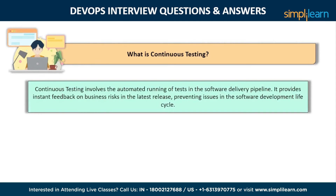The next question is: what is continuous testing? Continuous testing constitutes running of automated tests as part of the software delivery pipeline to provide instant feedback on the business risk present in the most recent release, in order to prevent problems in the software delivery lifecycle and to allow development teams to receive immediate feedback. Every build is continually tested in this manner. This results in a significant increase in speed and developer productivity, as it eliminates the requirement of rerunning all the tests after each update and project rebuild.